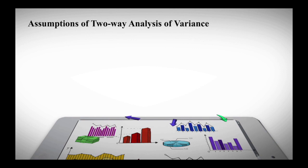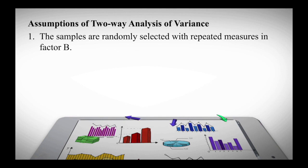The assumptions of two-way ANOVA: First, the samples are randomly selected with repeated measures in factor B. In randomized block design there are no repeated measures — only one data at each intersection of columns and rows. In two-way ANOVA, the intersection between columns and rows has repeated measures — it could be two, three, or more values depending on the data.